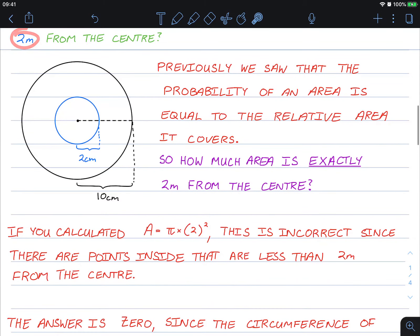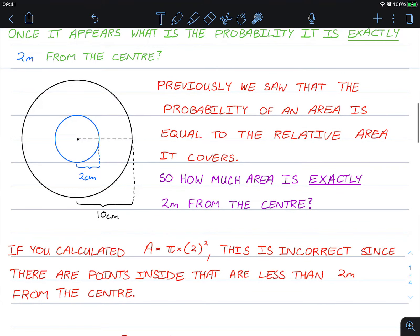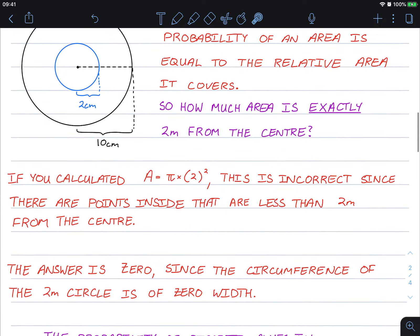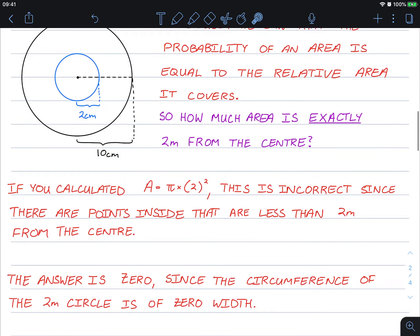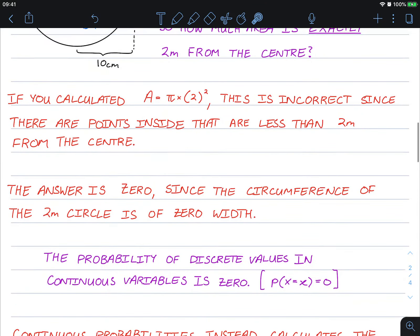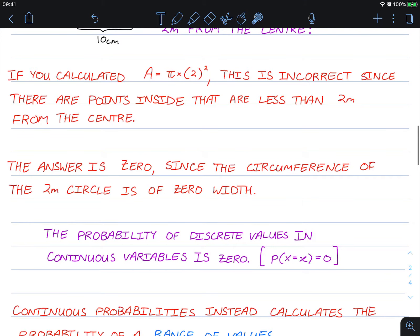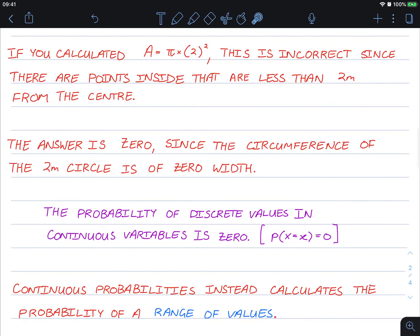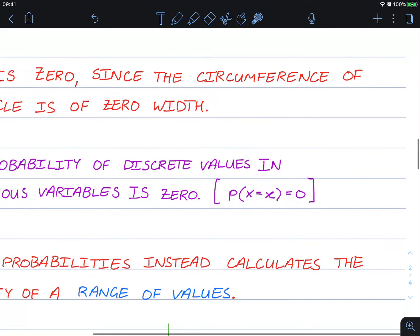The actual answer to this is zero, since the actual line itself has zero width. So the main point I'd like for you to get now is that the probability of discrete values in continuous variables is zero. The probability of getting a particular number is actually zero.